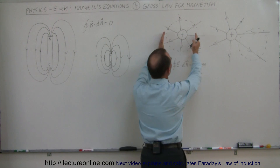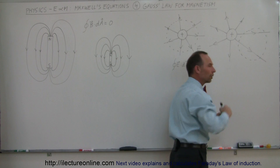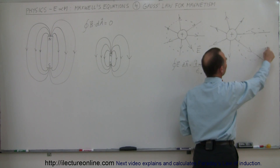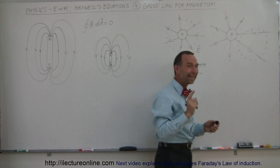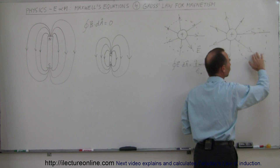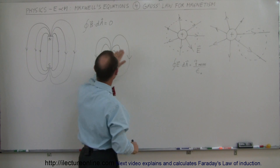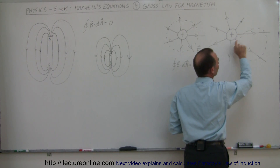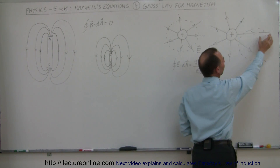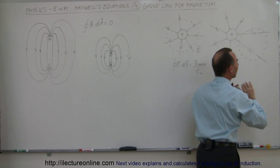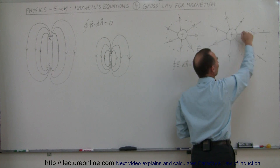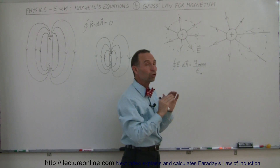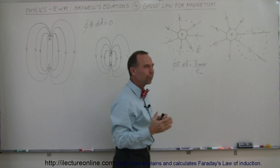Now if we take our Gaussian surface and move it so there's no charge inside, the surface integral of the electric field will equal zero. Notice that the electric field goes into the surface on one side and out of the surface on the other. Even though the field strength varies with distance, because the directions are opposite they cancel out, giving a result of zero.